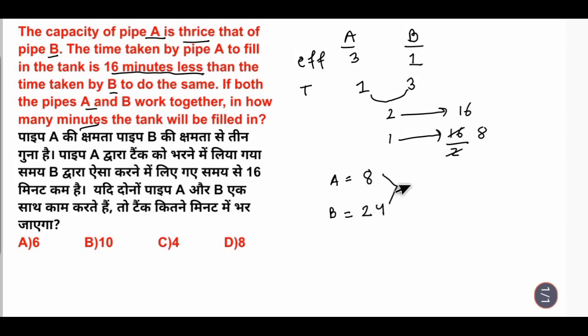We will do both LCM. How many times? 3 times. 24 times? 1 times. So, I will do both together work. Total work. How many times? 24. Both efficiency is 3 and 1, 4.